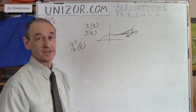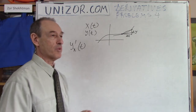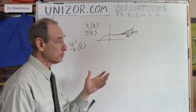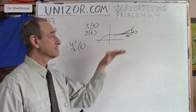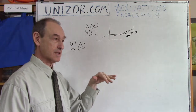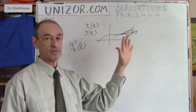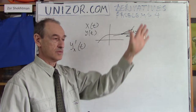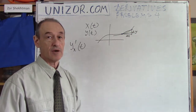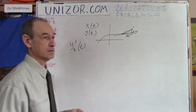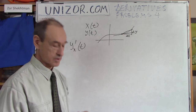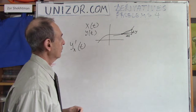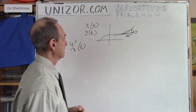What's the second derivative? It's a little bit more difficult to talk about mechanical sense, but you can think about the speed of change of this tangent. The steeper the trajectory changes its direction, the higher would be the second derivative.